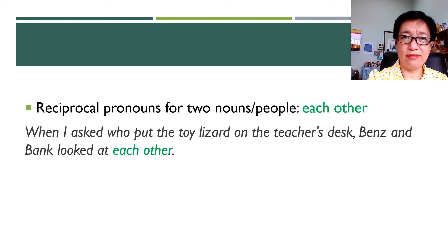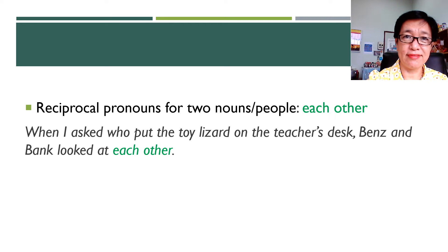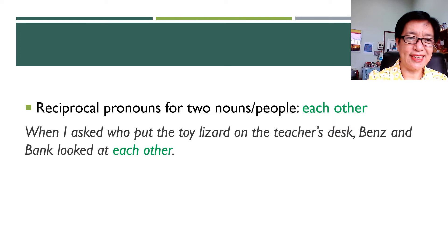There are only two reciprocal pronouns in English. One is 'each other.' Look at the sentence: when I asked who put the toy lizard on the teacher's desk, Benz and Bank looked at each other.